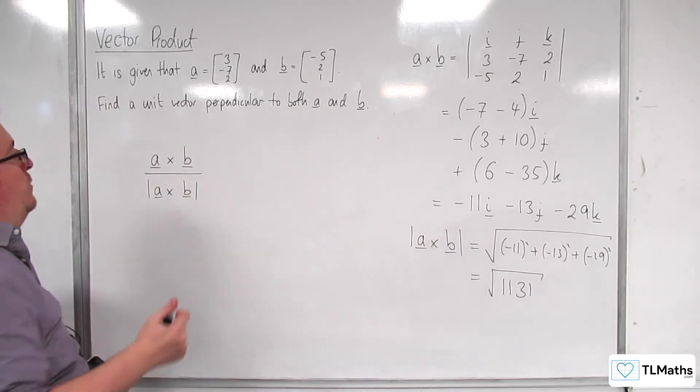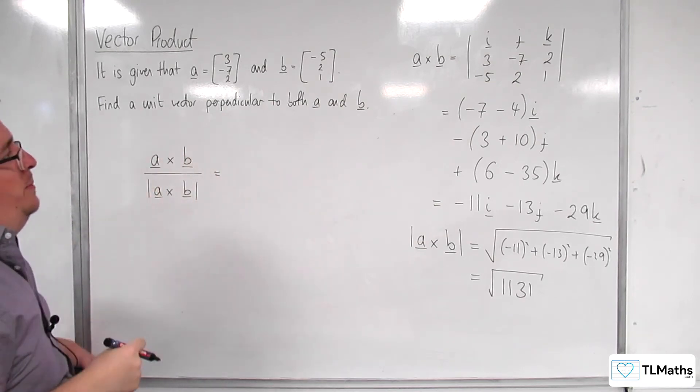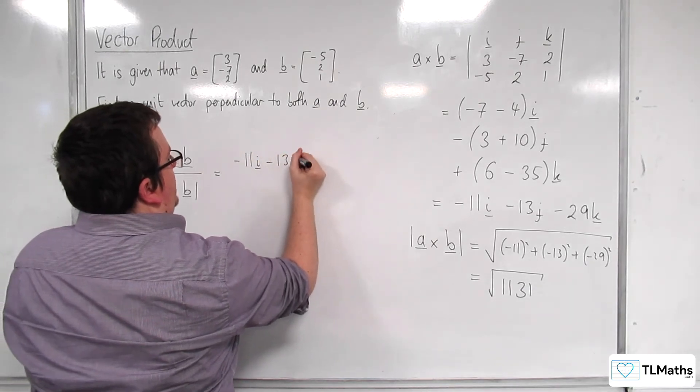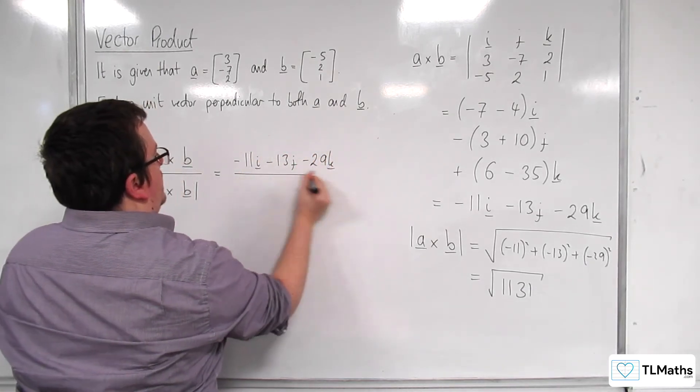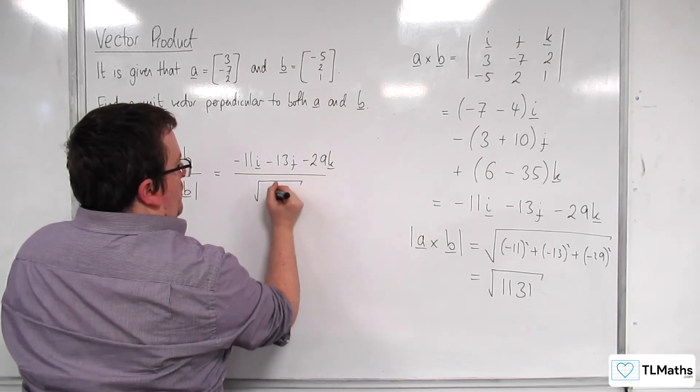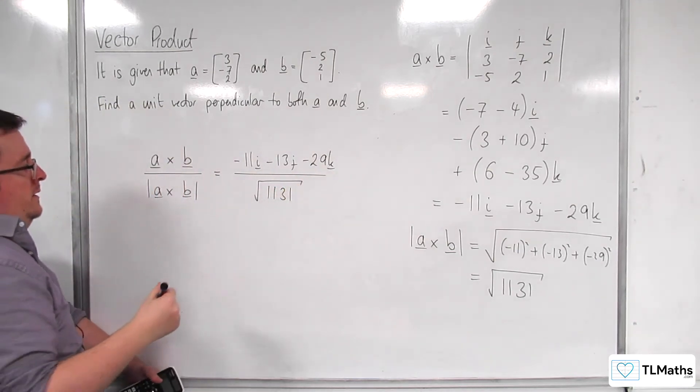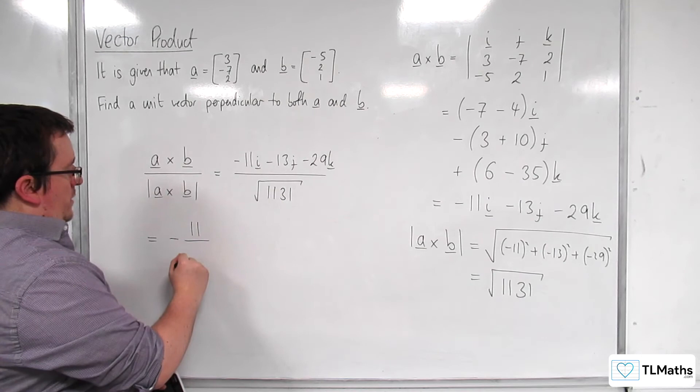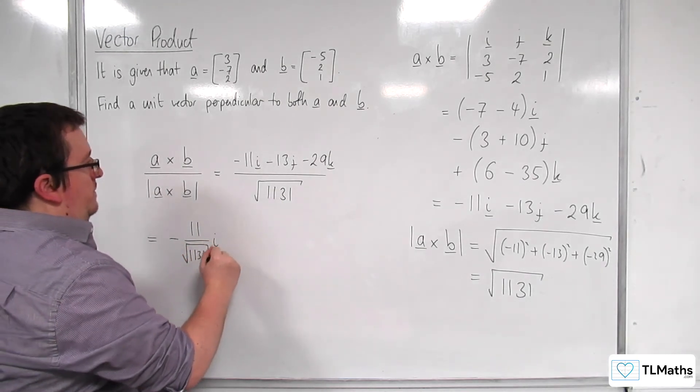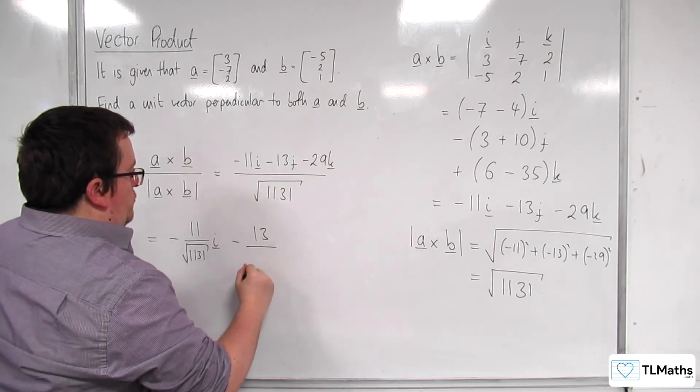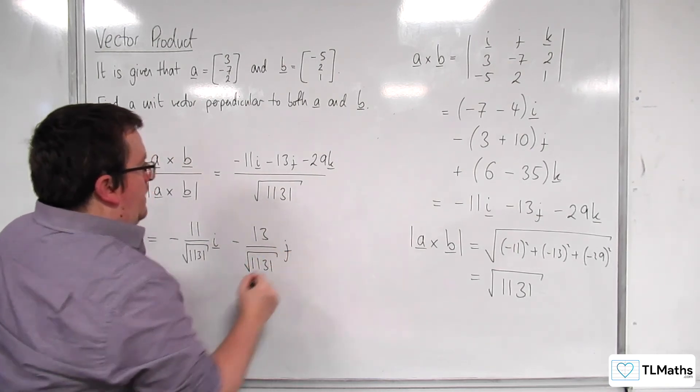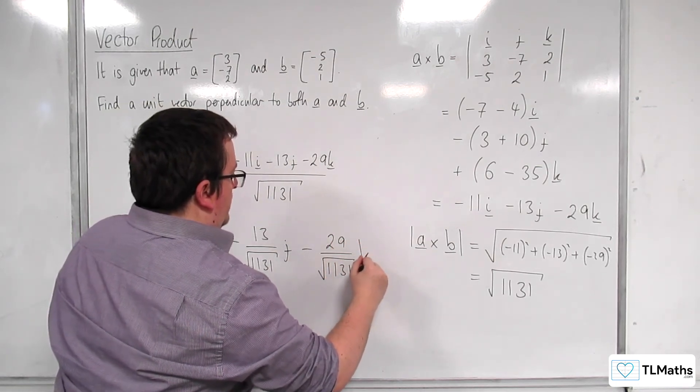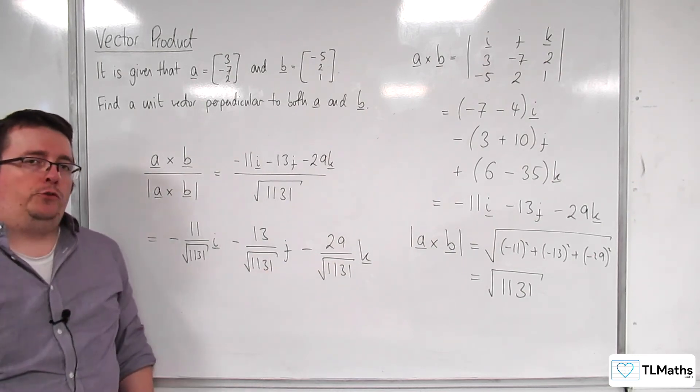So this unit vector perpendicular to both a and b is equal to -11 i, take away 13 j, take away 29 k, divided by the square root of 1131. So I'd probably prefer writing that as -11 over root 1131 i, take away 13 over root 1131 j, take away 29 over root 1131 k. And so that is the answer I'm looking for.